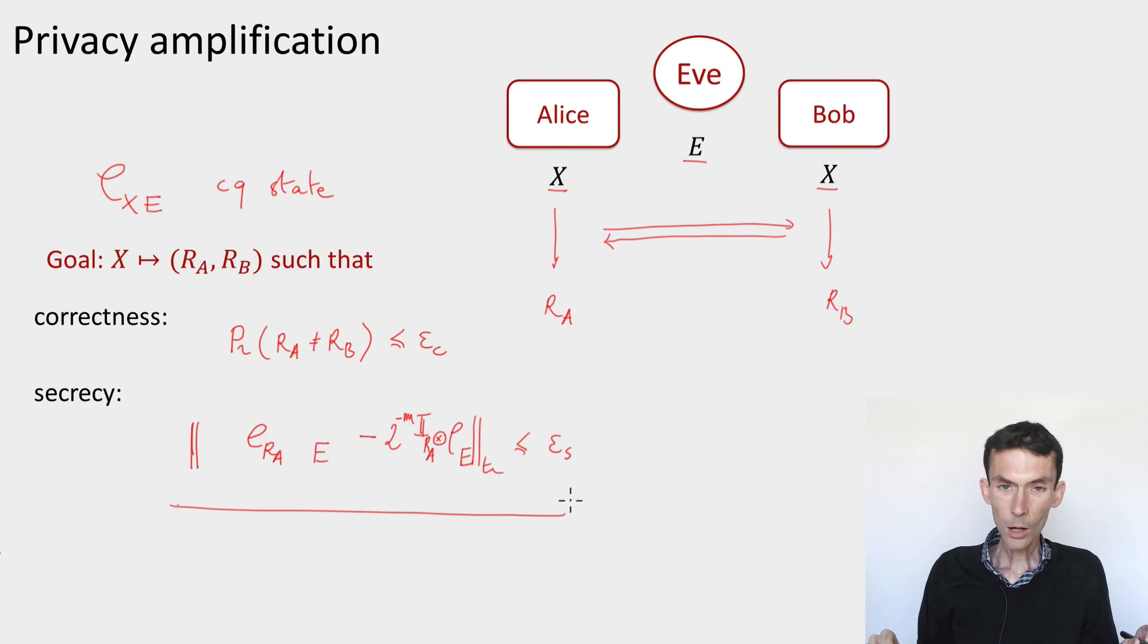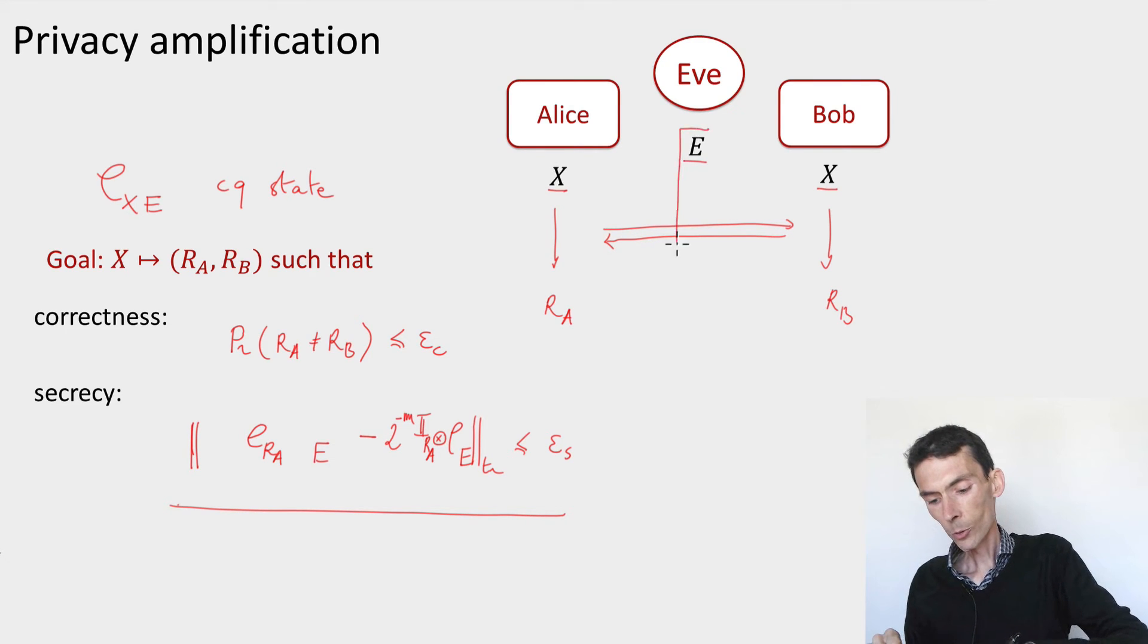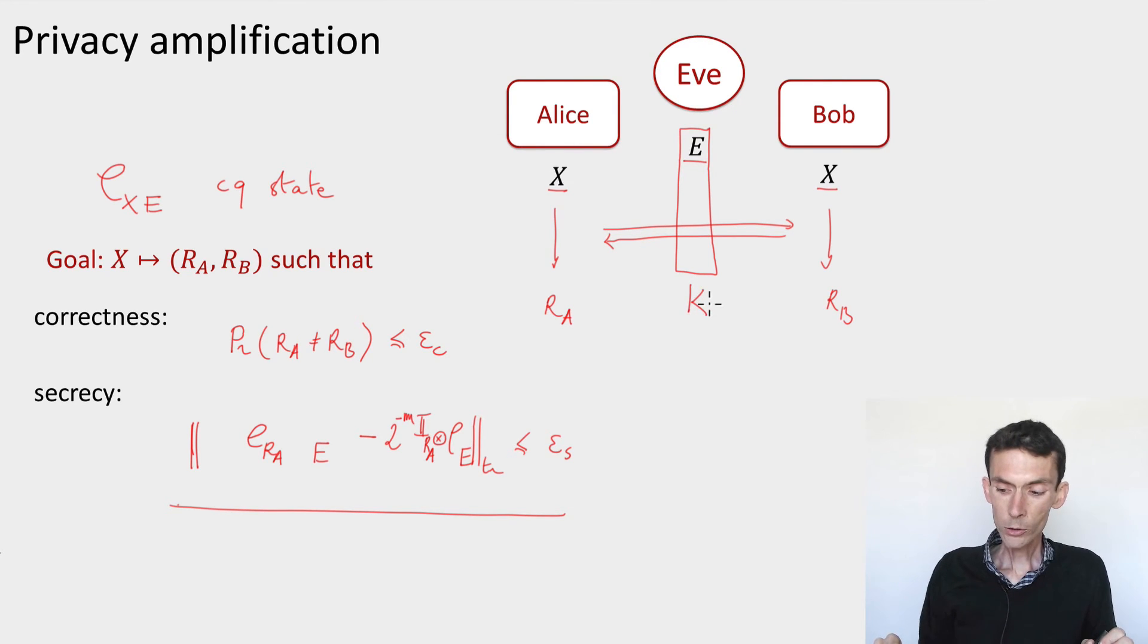Now a couple things. First of all, I mentioned public communication here. What this means is that the eavesdropper can listen in and has access to the public information that's shared. So let's call k all the information that's exchanged on this public channel. Then I want not only that r is independent from the eavesdropper's initial side information e, but it should actually be independent from the updated side information, which includes the public discussion. So the proper notion of security should involve k here and here. k should also be uncorrelated with the eavesdropper's side information. This is quite important.